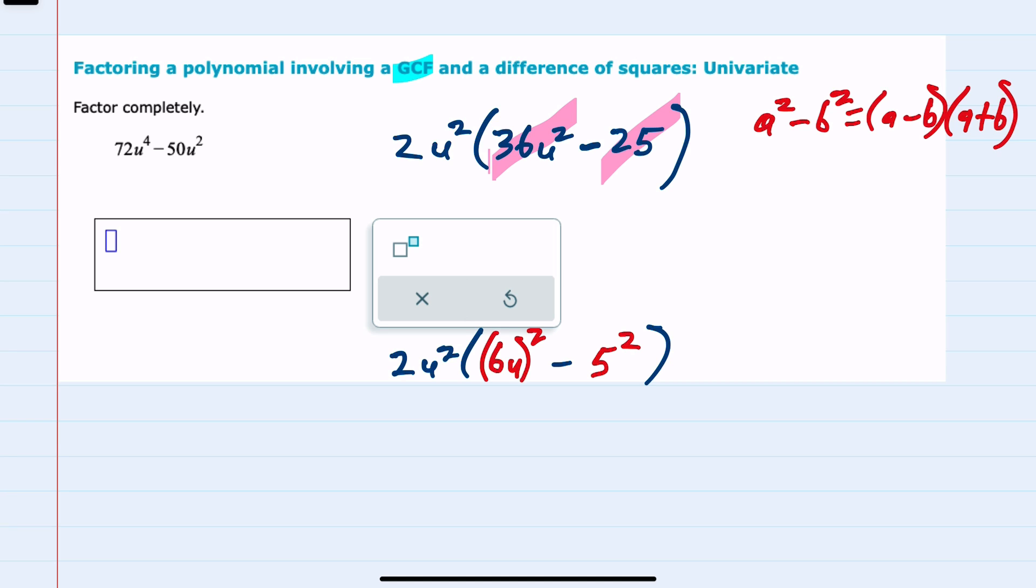So to use the difference of two squares, I would first want to make sure that I don't lose the 2u squared that's on the outside. But now factoring what's inside these parentheses, I have it written as a quantity squared minus a quantity squared.